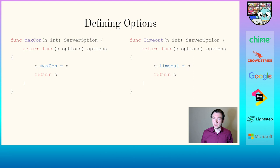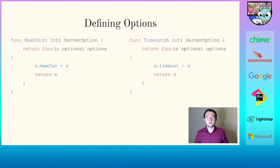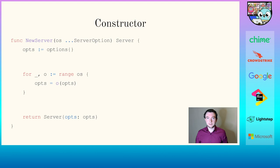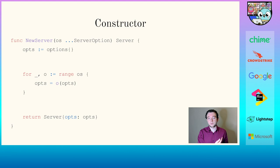We can do the same for timeout: it accepts an integer N and returns a server option, basically the same as maximum connections — we don't return a set result but return a function that when called will change the timeout to N. If we use this in a constructor called newServer, it takes any amount of server options. Inside, we iterate over all the options, and the options defined on the first line keep being changed by calling each option function. Similar to how you append things to a slice in Go, you call each option function with the current options and reassign it. This means the options are never mutated but are reassigned. Finally, we return a server with these options applied.